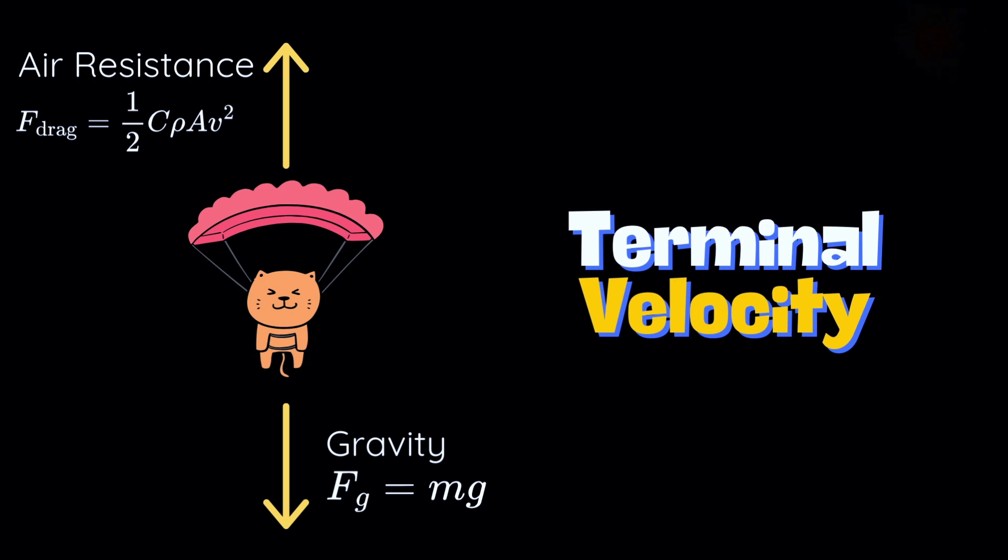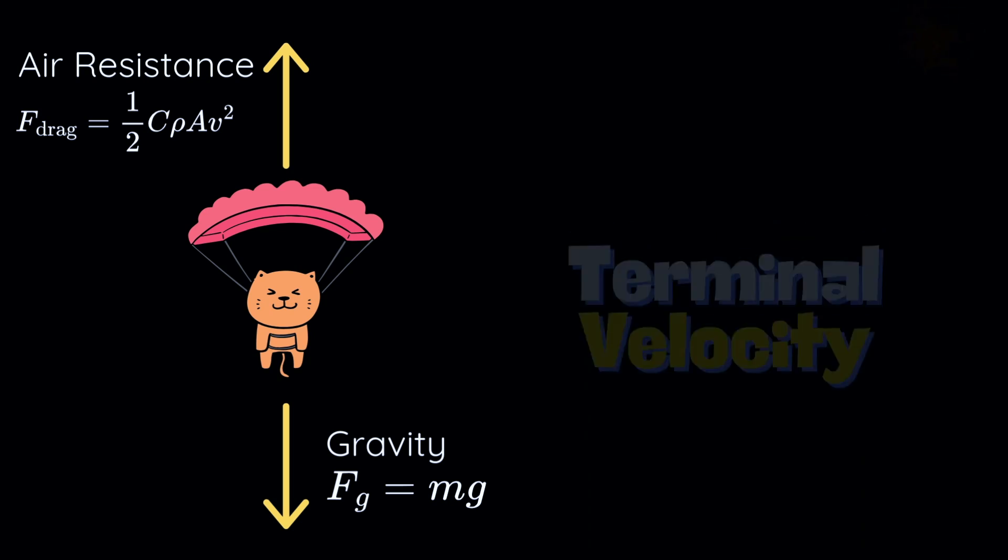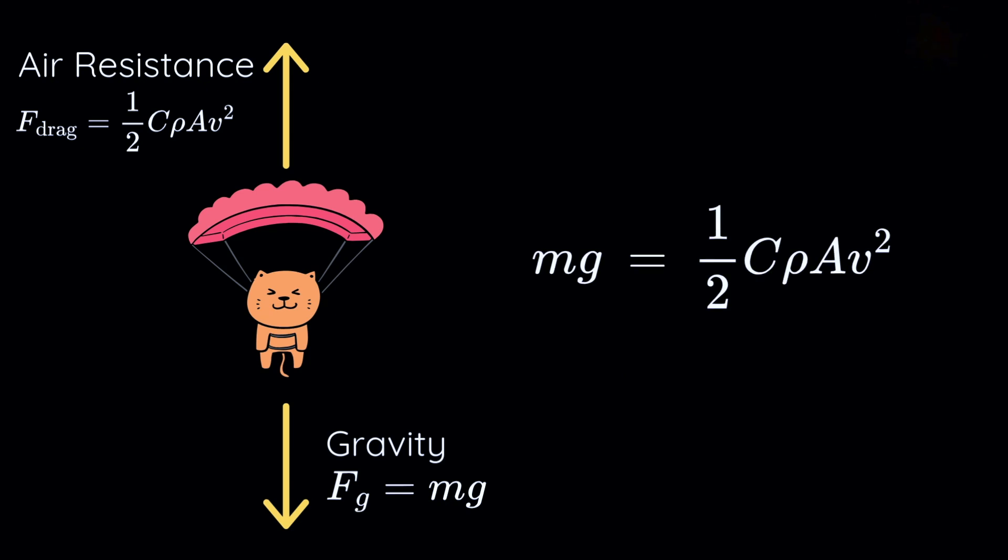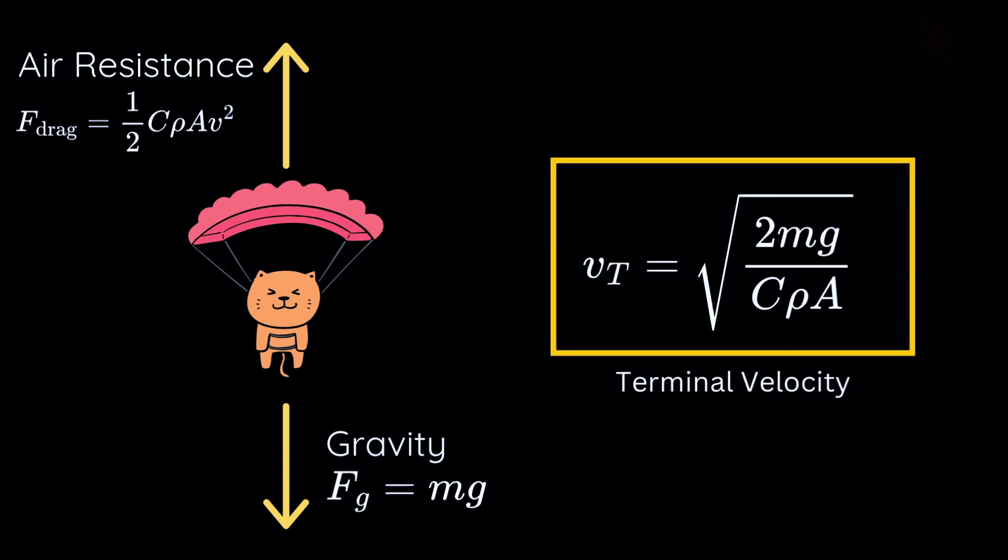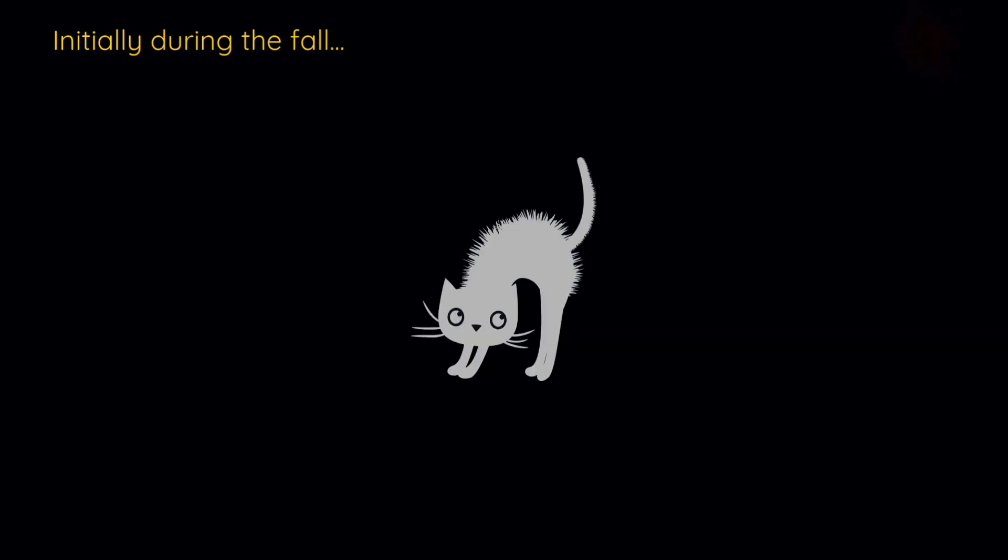Terminal velocity can be derived by setting the two opposing forces equal to each other, which, if we rearrange, gives us an expression for this terminal velocity. And here's the important thing to remember: larger the cross-section area, lower is this terminal speed.